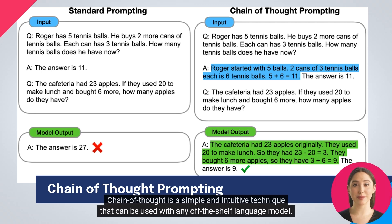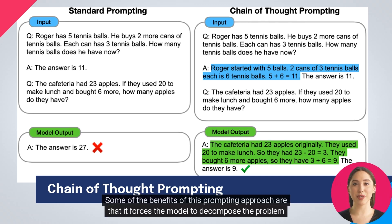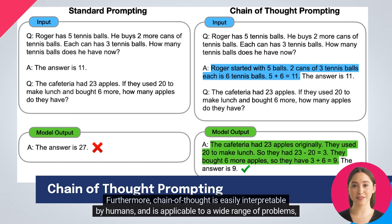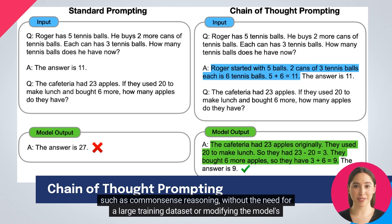Chain-of-thought is a simple and intuitive technique that can be used with any off-the-shelf language model. Some of the benefits of this prompting approach are that it forces the model to decompose the problem into several reasoning steps, allocating more computation to them before producing the final answer. Furthermore, chain-of-thought is easily interpretable by humans and is applicable to a wide range of problems, such as common-sense reasoning, without the need for a large training dataset or modifying the model's weights.